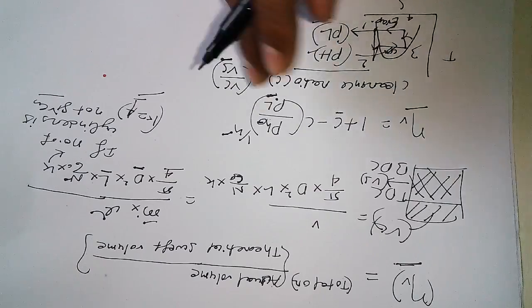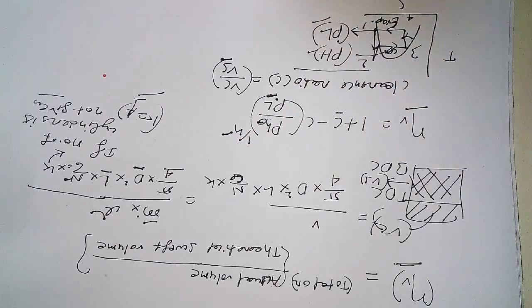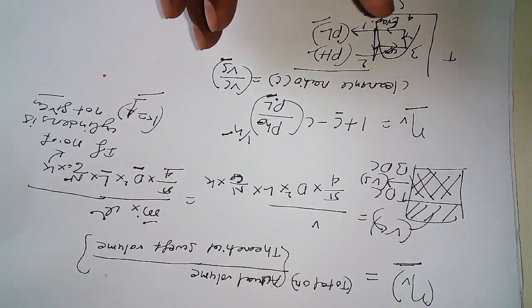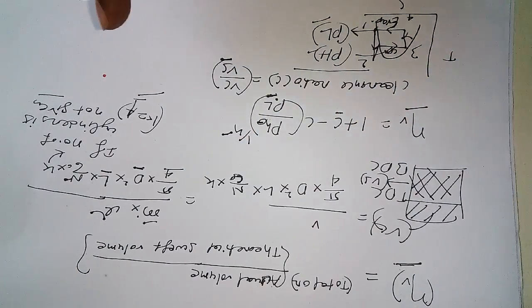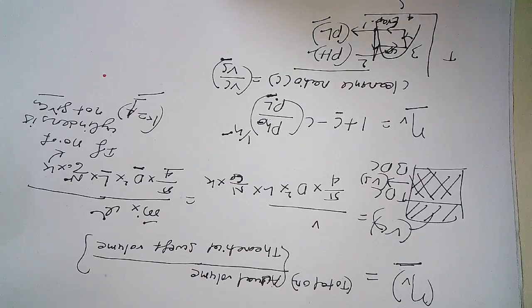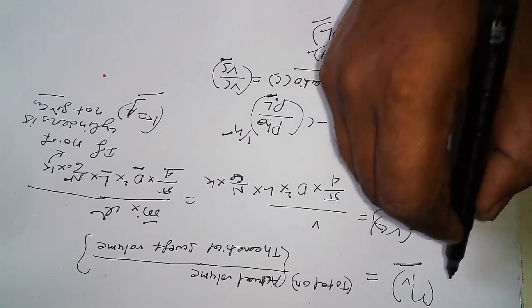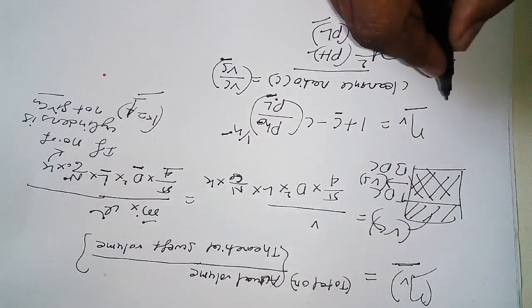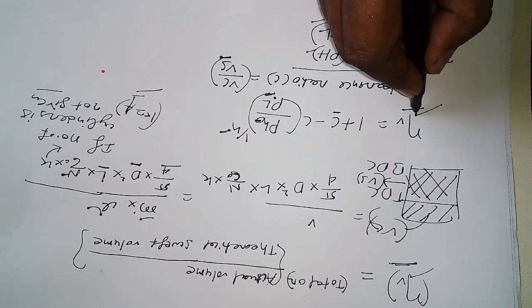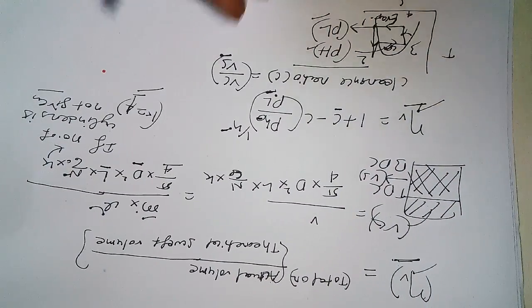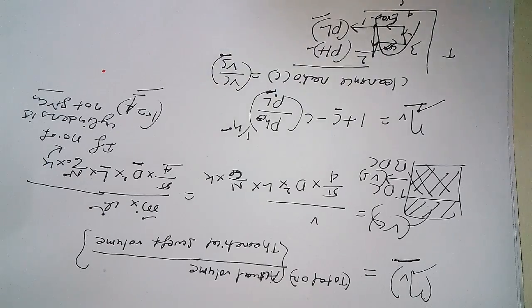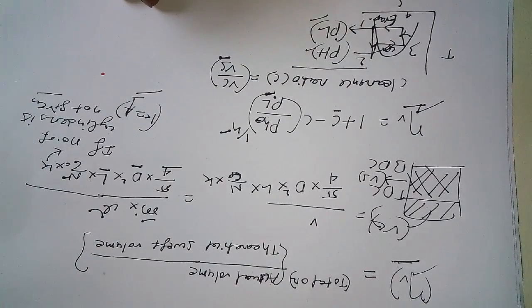So we have two ways to find volumetric efficiency: one using actual and theoretical swept volumes, and the other using the clearance ratio formula. I hope you understand the topic. Thanks for watching — hope to see you again in the next video.